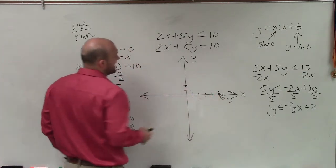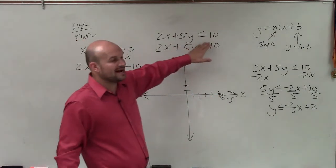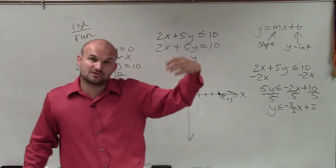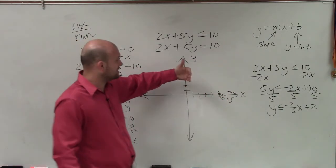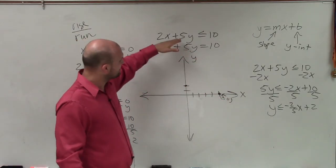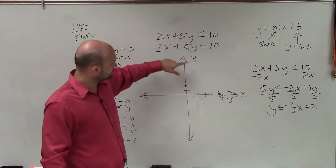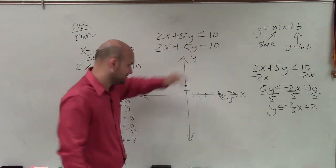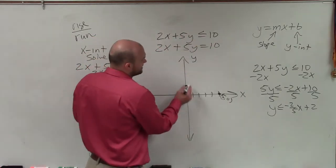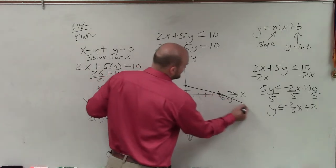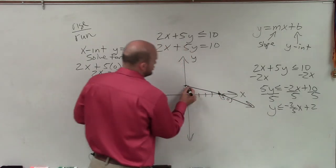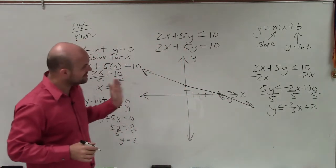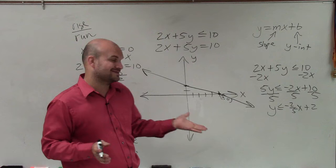Before I connect the points, I want to make sure what type of line to draw. Is the graph going to be dashed or a solid line — what type of boundary line? Since this is less than or equal to, I know the points on the line will be part of my solution. Now I connect those two points.